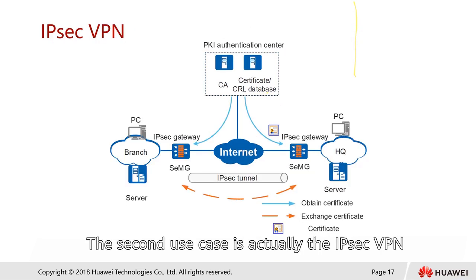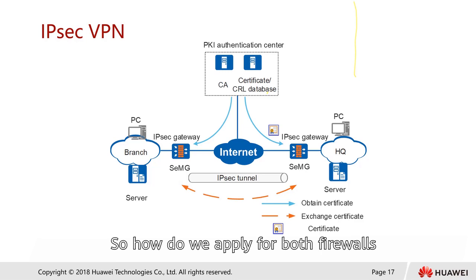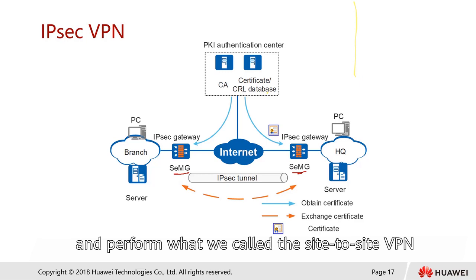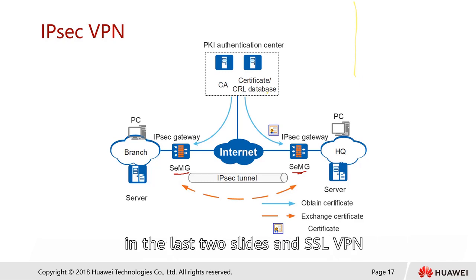The second use case is actually the IPsec VPN. How do we apply for both firewalls to perform what we call the site-to-site VPN? This process I've already explained in detail in the last two slides.